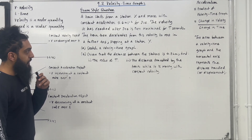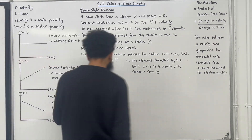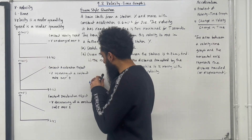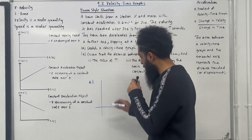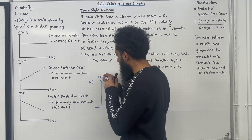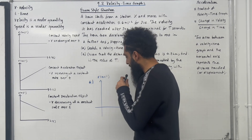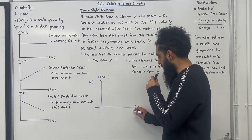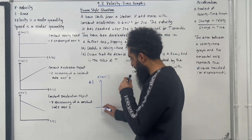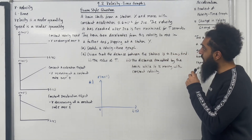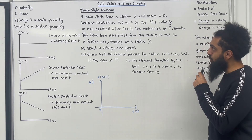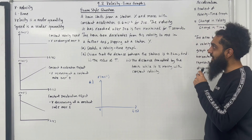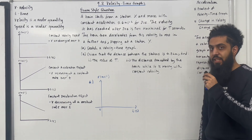Part A is to sketch a velocity-time graph. The vertical axis is V in metres per second, and the horizontal axis is T in seconds. This is the origin. A train starts from station X and moves with constant acceleration 0.6 metres per second per second for 20 seconds.